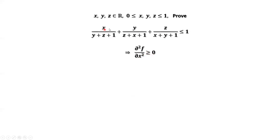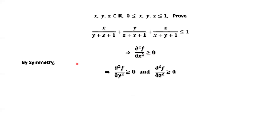From this given question, all x, y, and z are symmetric. By symmetry, we have similar results: the second-order partial derivative of f with respect to y is bigger than or equal to zero, and the second-order partial derivative of f with respect to z is bigger than or equal to zero.